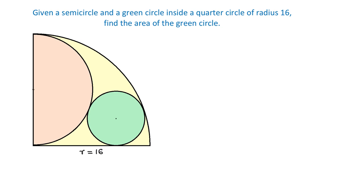In this figure, we have a quarter circle with the radius of 16 units. Inside the quarter circle, we have a semicircle and a green circle that is tangent to both the semicircle and the quarter circle.